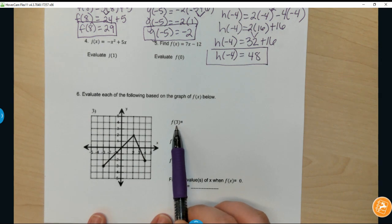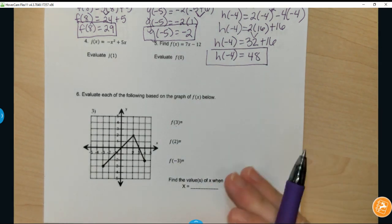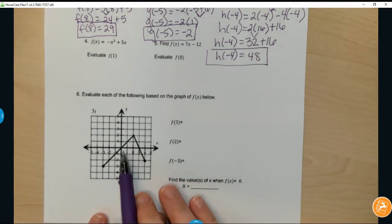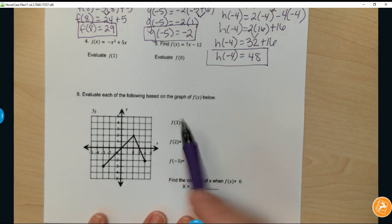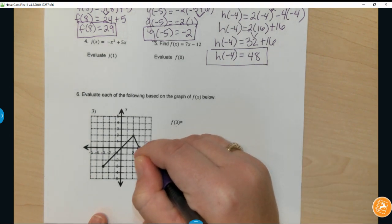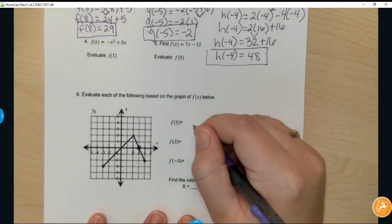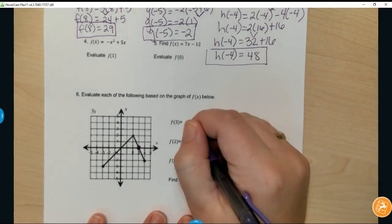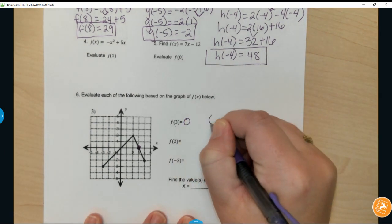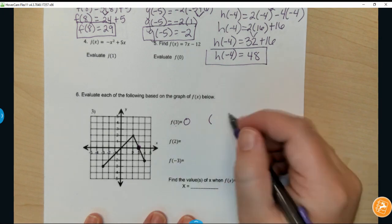If it's saying f(3), what this is saying is that you're looking for when x is 3, what is y? So I'm going to go over when x is 3: 1, 2, 3. What is y? Well, here's your point right here. So that point would be (3, 0). So f(3) equals 0, meaning that the point that falls on the graph is (3, 0).